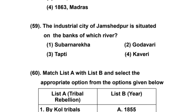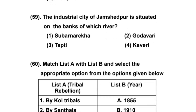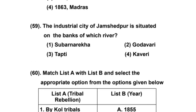The industrial city of Jamshedpur is situated on the banks of which river? You have to go through the rivers given in the question paper. Option 1: Subarnarekha, 2: Godavari, 3: Tapti, 4: Kaveri. The right answer is option 1 — Subarnarekha.